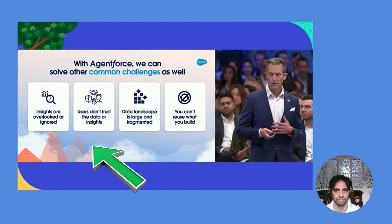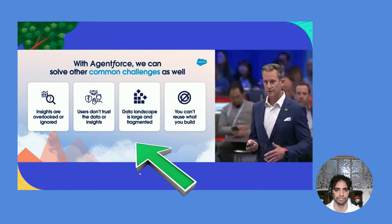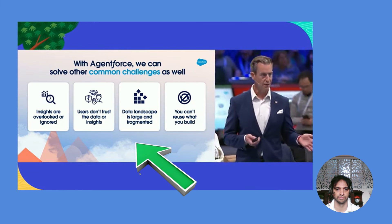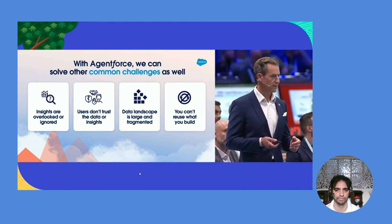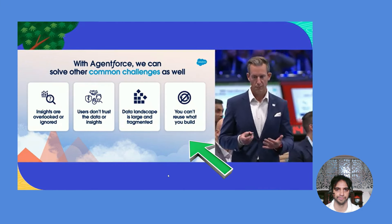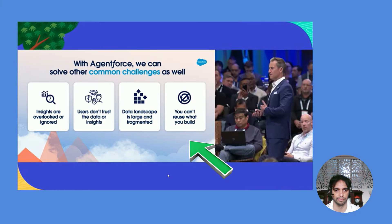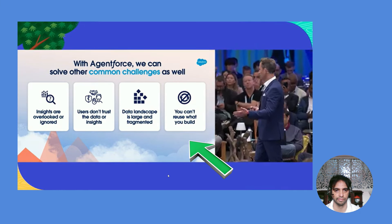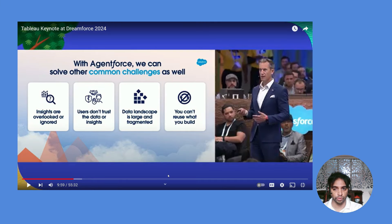The third challenge is the data landscape — it's extremely large and fragmented and only getting bigger and more complex. Many customers confirmed this is a continual problem. The fourth gap is that it's not easy to reuse what you build: if you build a prep flow or a visualization, how do you reuse it, share it with colleagues, put it into an ecosystem, and monetize it? These are the major gaps in the current BI ecosystem that Tableau Agent and Agentforce aim to address.